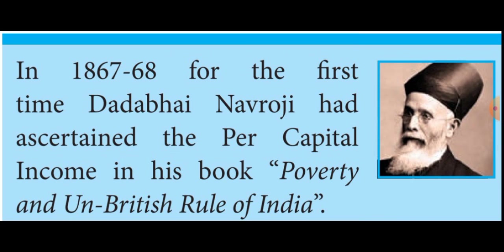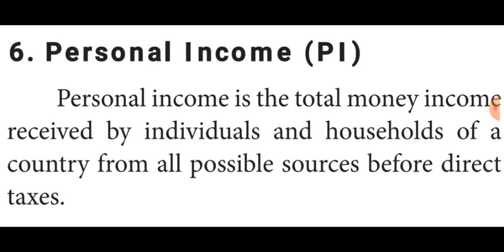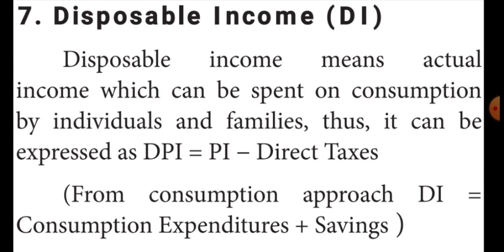Sixth is personal income — that means individually and households in a country, one particular person or one particular family, how much income they are getting is called personal income. Finally, disposable income means one individual or one family's income — how much they are spending and how much they are saving. DI is equal to consumption expenditure plus savings. That is called disposable income.